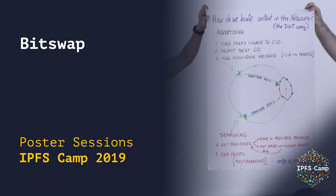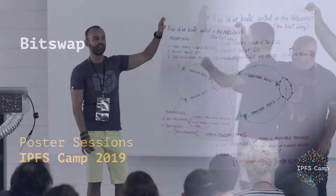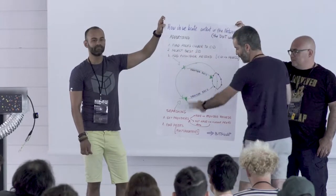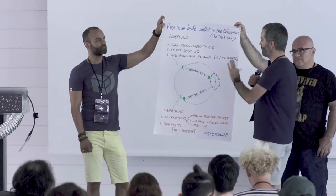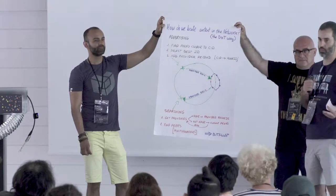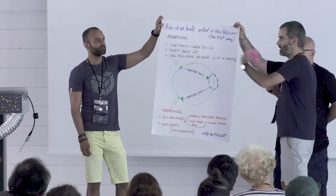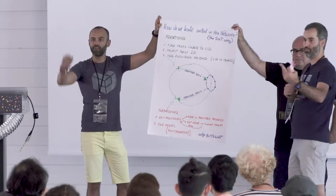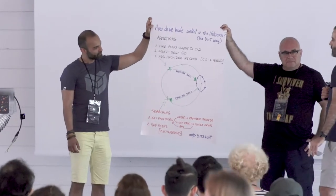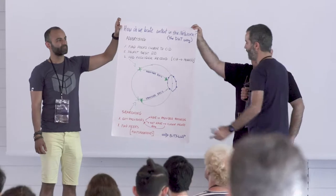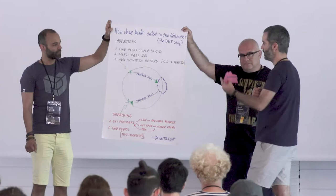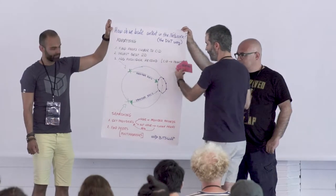Now it's the DHT way. We have two sides of the equation: the advertising side and the searching side. On the advertising side, step one is find peers closer to the CID we want, or the CID we are advertising. Step two, select the best 20 peers for that CID, then we add provider records to those 20 peers. The provider record is the CID plus the peer ID.